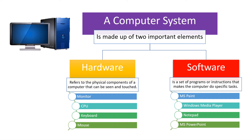Let's talk about a computer system. A computer system is made up of two important elements: hardware and software. When I say hardware, I mean the parts of a computer that can be seen and touched, such as monitor, CPU, keyboard, mouse, etc.